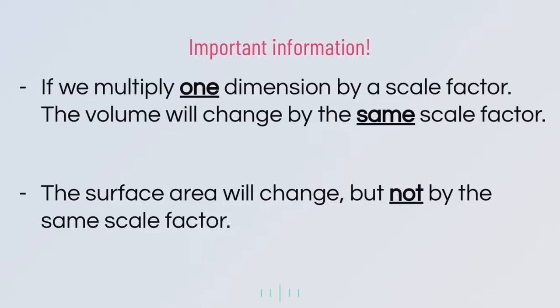Looking at the important information, we have two key ideas. The first one is that if we multiply one dimension by a scale factor, the volume will change by the same scale factor. The second piece is that the surface area will change, but not by the same scale factor.